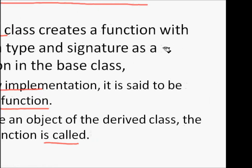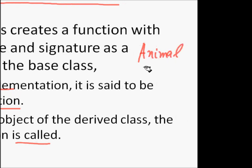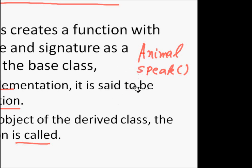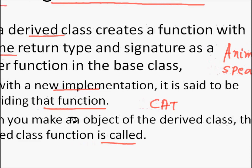For example, consider an animal class which has a function called speak. For the base class we say 'the animal speaks', but when we make a dog class it would be better to print 'dog barks', because we know that a dog barks. If we make a cat class, in speak we should print 'cat meows'. So the derived class overrides the base class speak function with a more appropriate implementation.